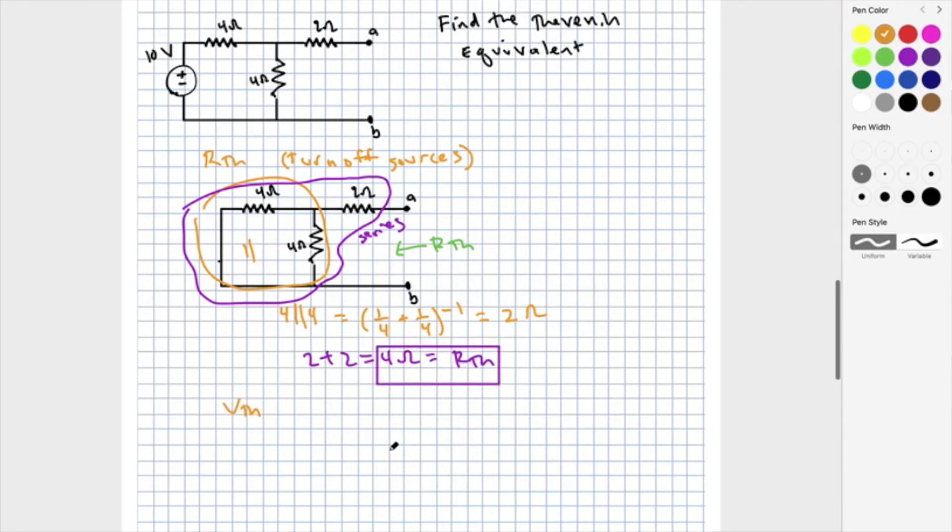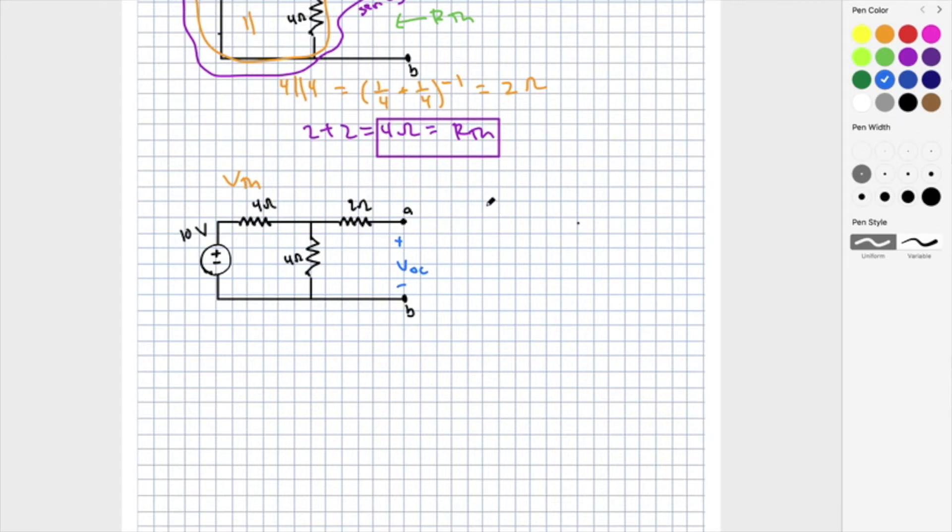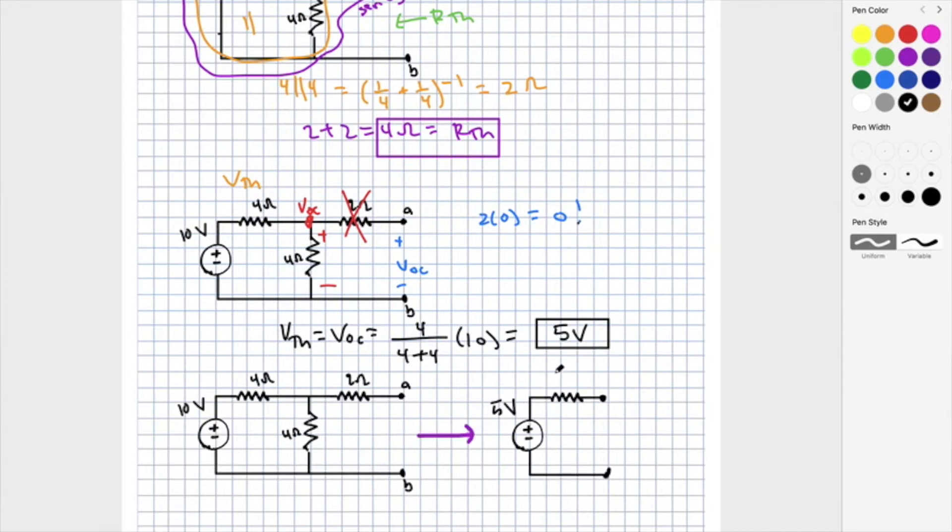Next, let's find V-Thevenin. We are looking for the voltage across the terminals if we consider the terminals as an open circuit. Since there is an open circuit at the terminals, that means that the current through the 2 ohm resistor is zero. With zero current, the voltage drop is also zero. So we are actually looking for the voltage at the node above the 2 ohm resistor. We can use voltage division to find the voltage across the second 4 ohm resistor. Using voltage division, we take the resistor we care about over the sum of the resistors and multiply by the source voltage to get 5 volts. The result is that we have replaced a more complicated circuit by a single voltage source and a resistor.